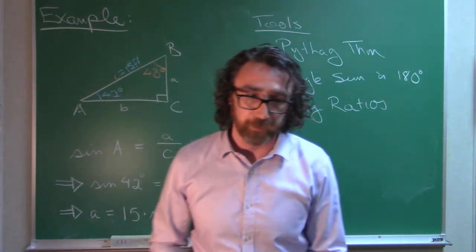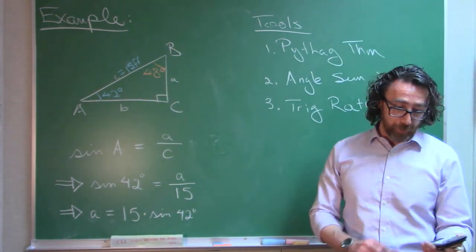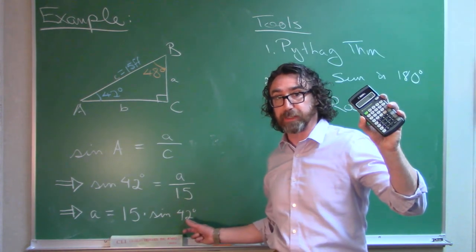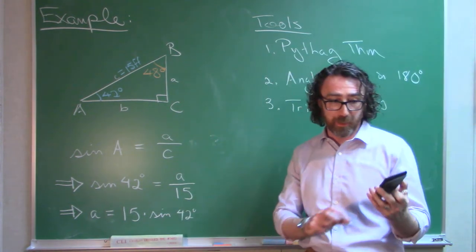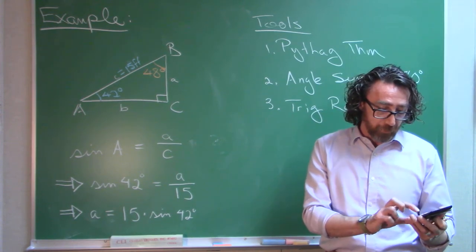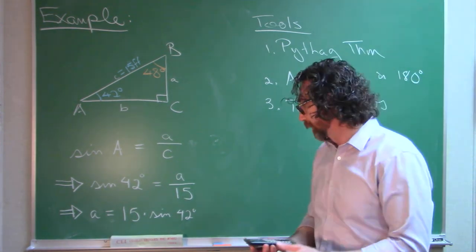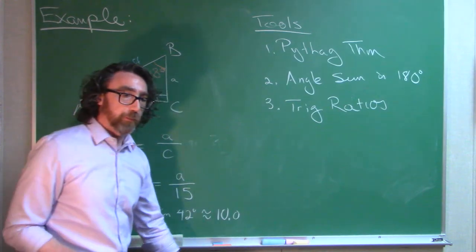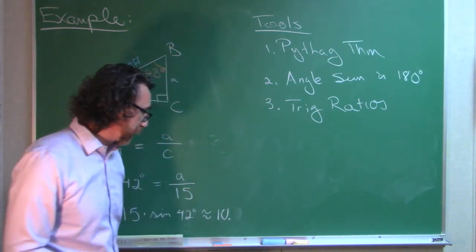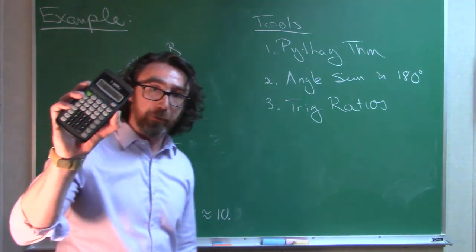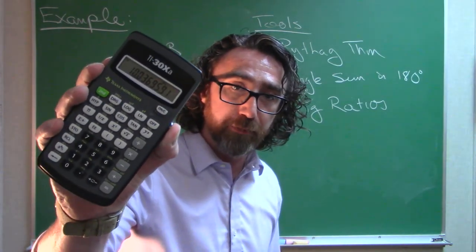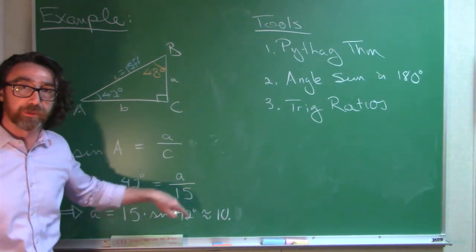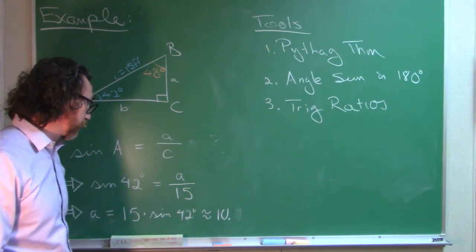So 15 times sine 42 degrees. We'll break out our calculator here. Remember, make sure you got it in degree mode. On this calculator, I would do it this way. I'd put in the 42 degrees first. This is an old-fashioned scientific calculator. Put in the 42 first, hit the sine button, multiply that by 15. And I get 10.